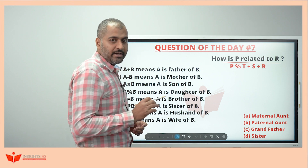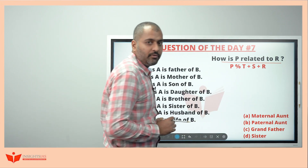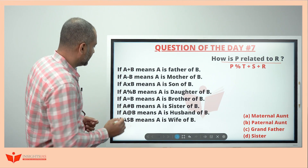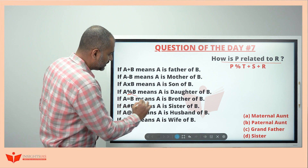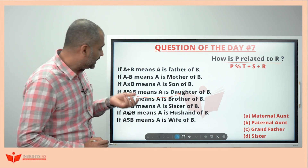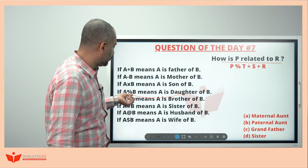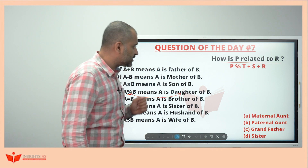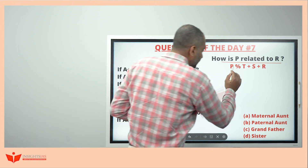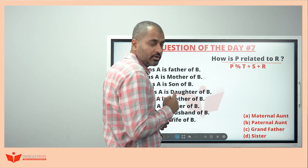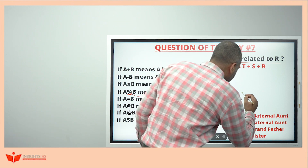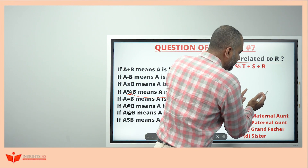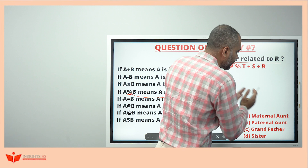We'll try to put this in the form of a tree. Percentage means P is daughter of T — P is in the lower generation and T is the upper generation. So P is daughter here, representing P percentage T in tree form. Now T plus S: plus means father, so T is the father of S. One generation down, so S comes below T.